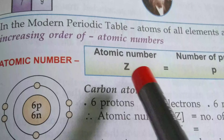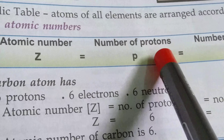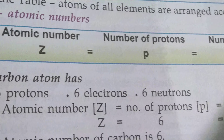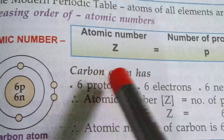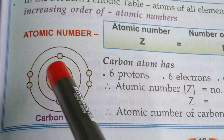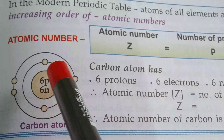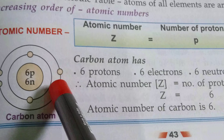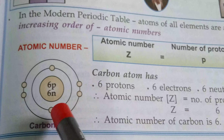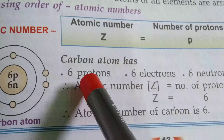Atomic number is denoted as capital Z, and it is equal to the number of protons and equal to the number of electrons the atom has. The carbon atom has 6 protons, 6 neutrons, and 6 electrons. In the center of the nucleus there are 6 protons and 6 neutrons — both carry the mass number, which is 12. And the number of electrons: 1, 2, 3, 4, 5, 6 — equal to the number of protons.